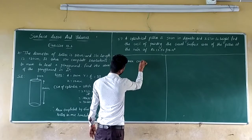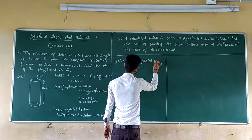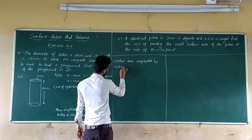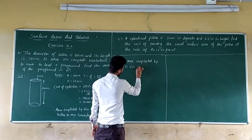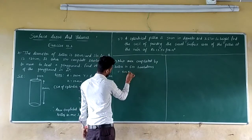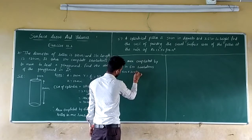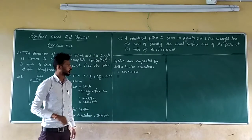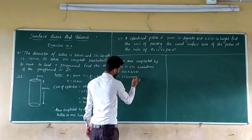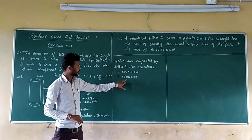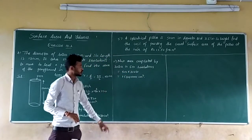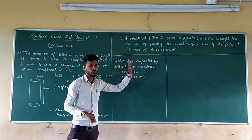Area completed by the roller in 500 revolutions equals 500 into 31,680. Multiply 500 into 31,680, you get 1,58,40,000 cm². This is the area completed by the roller in 500 revolutions.